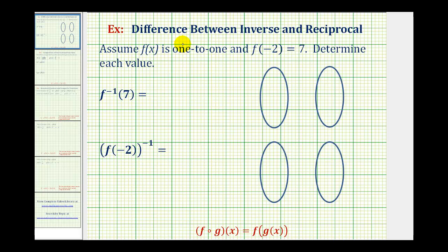These two examples will emphasize the difference between inverse and reciprocal. Assume f(x) is a one-to-one function and f(-2) = 7. We want to determine each value here on the left.